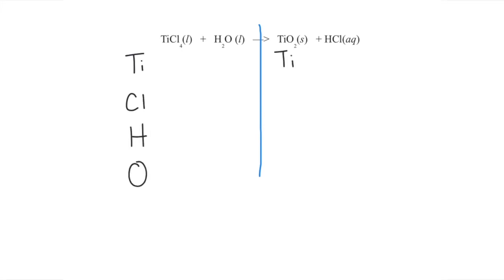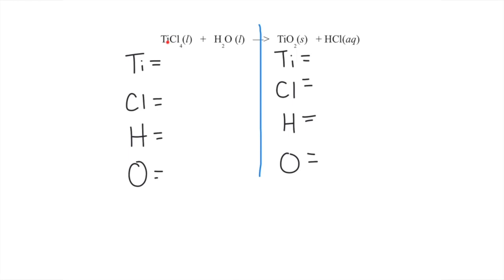I do the same on the other side, and then we count the number of those elements that occur on each side. For that we're looking at the subscripts, which are the numbers that come after the element. If we don't see a number, that just means there's a one there. So on the left I have one titanium, four chlorines, two hydrogens, one oxygen. On the right: one titanium, one chlorine, one hydrogen, two oxygens.